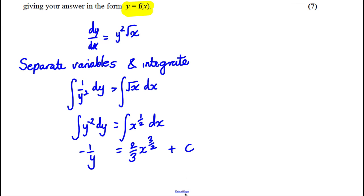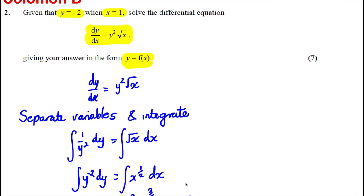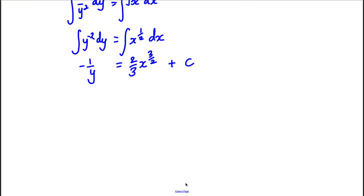Now we're going to substitute. Remember, at the start of the question, we're told that when y is negative 2, x is 1. So y = -2, x = 1. We're going to sub that in. So -1/(-2) = (2/3)(1)^(3/2) + c.